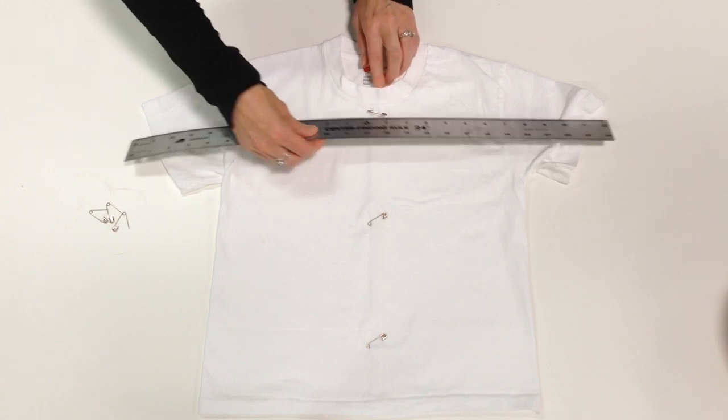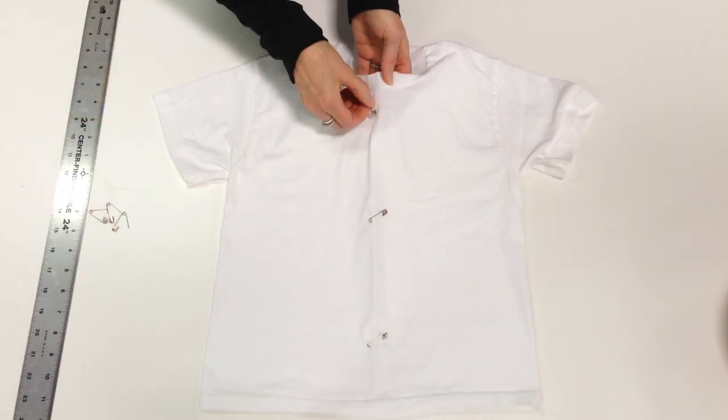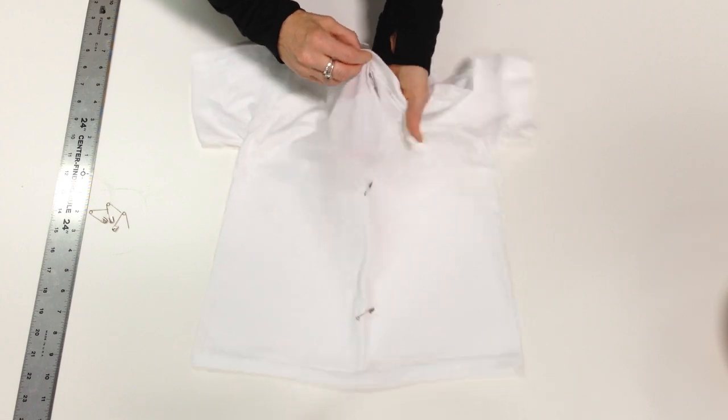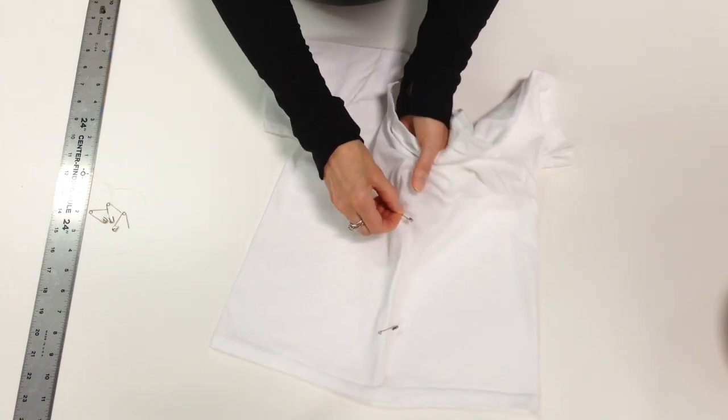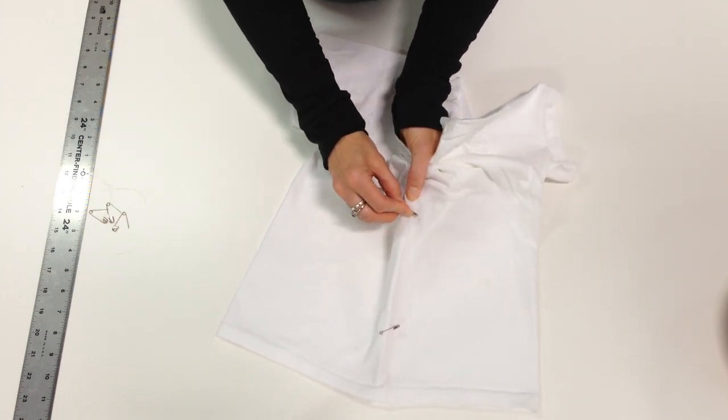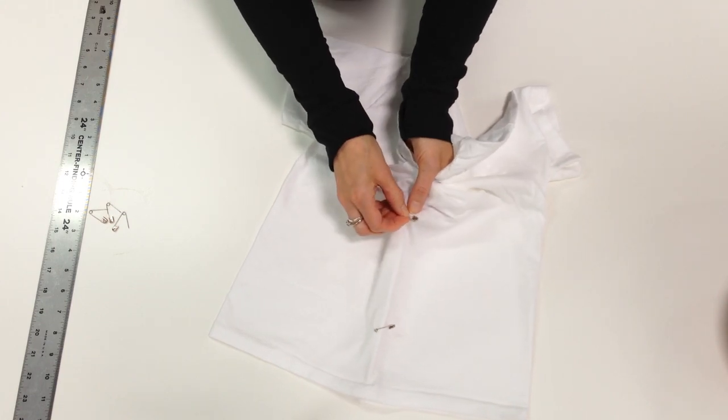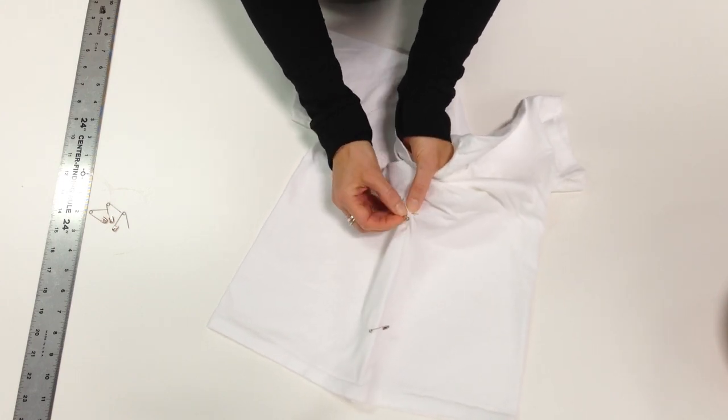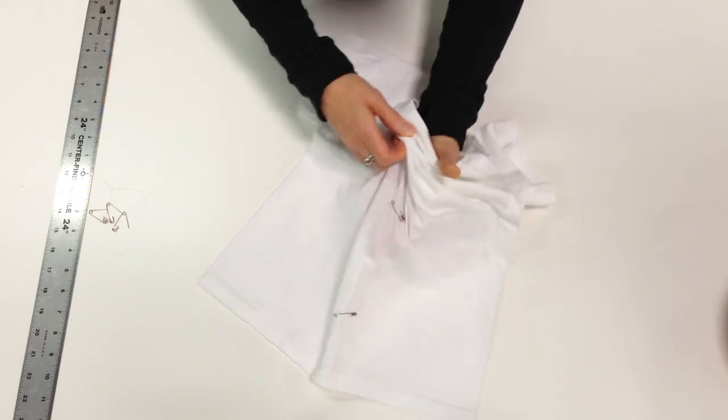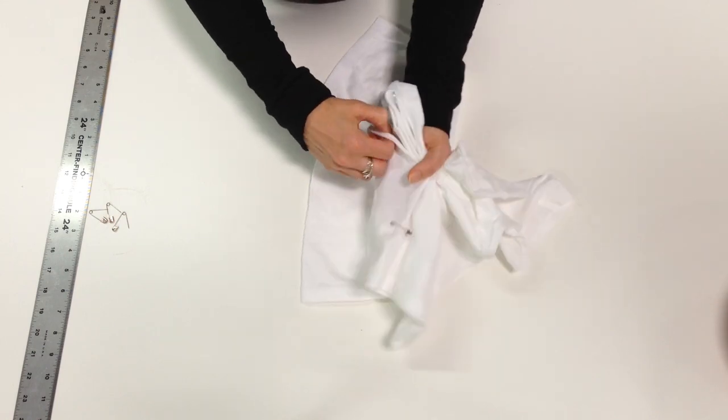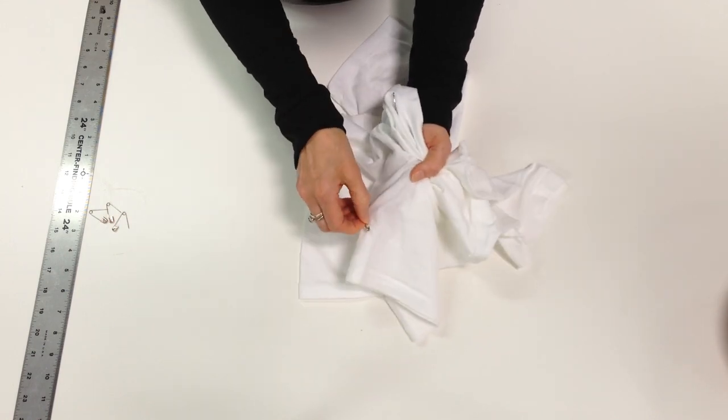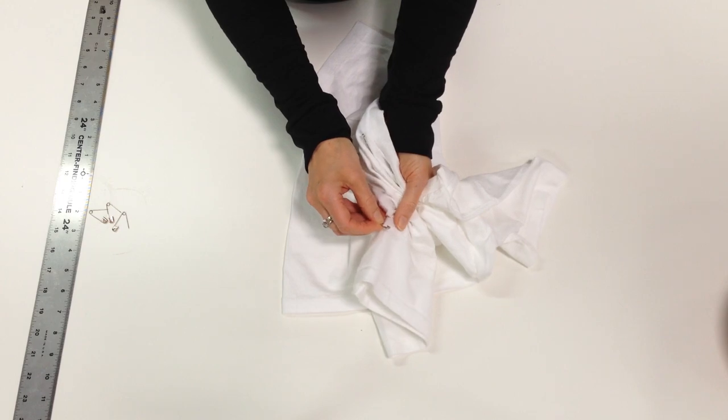I'm just going to stick my hand inside this shirt so that I'm only pinning the front layer. Then I'm going to flip the shirt over and mark the back too, because once the fabric starts getting folded up into its little origami shape it can start to get confusing about what is where.